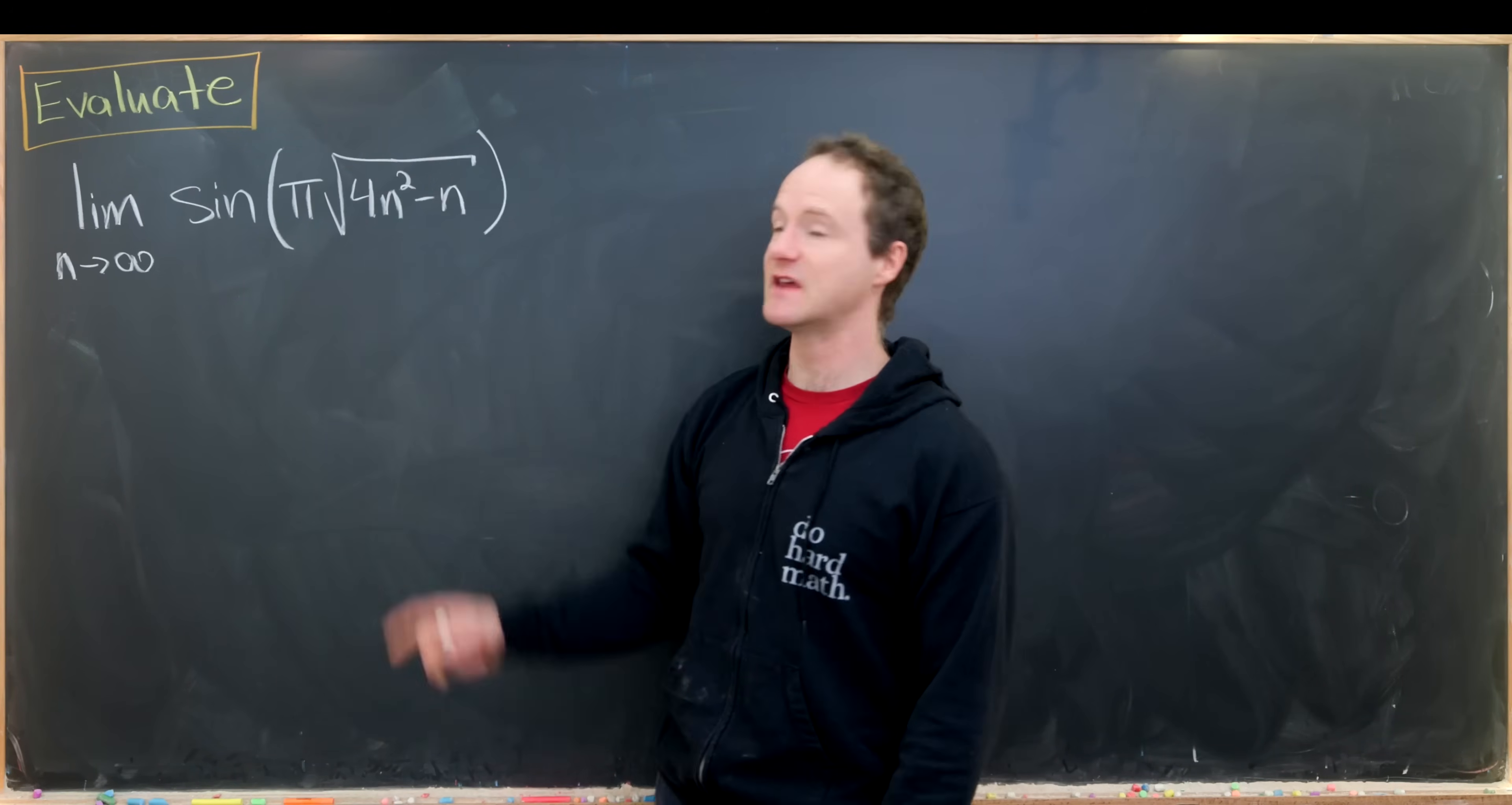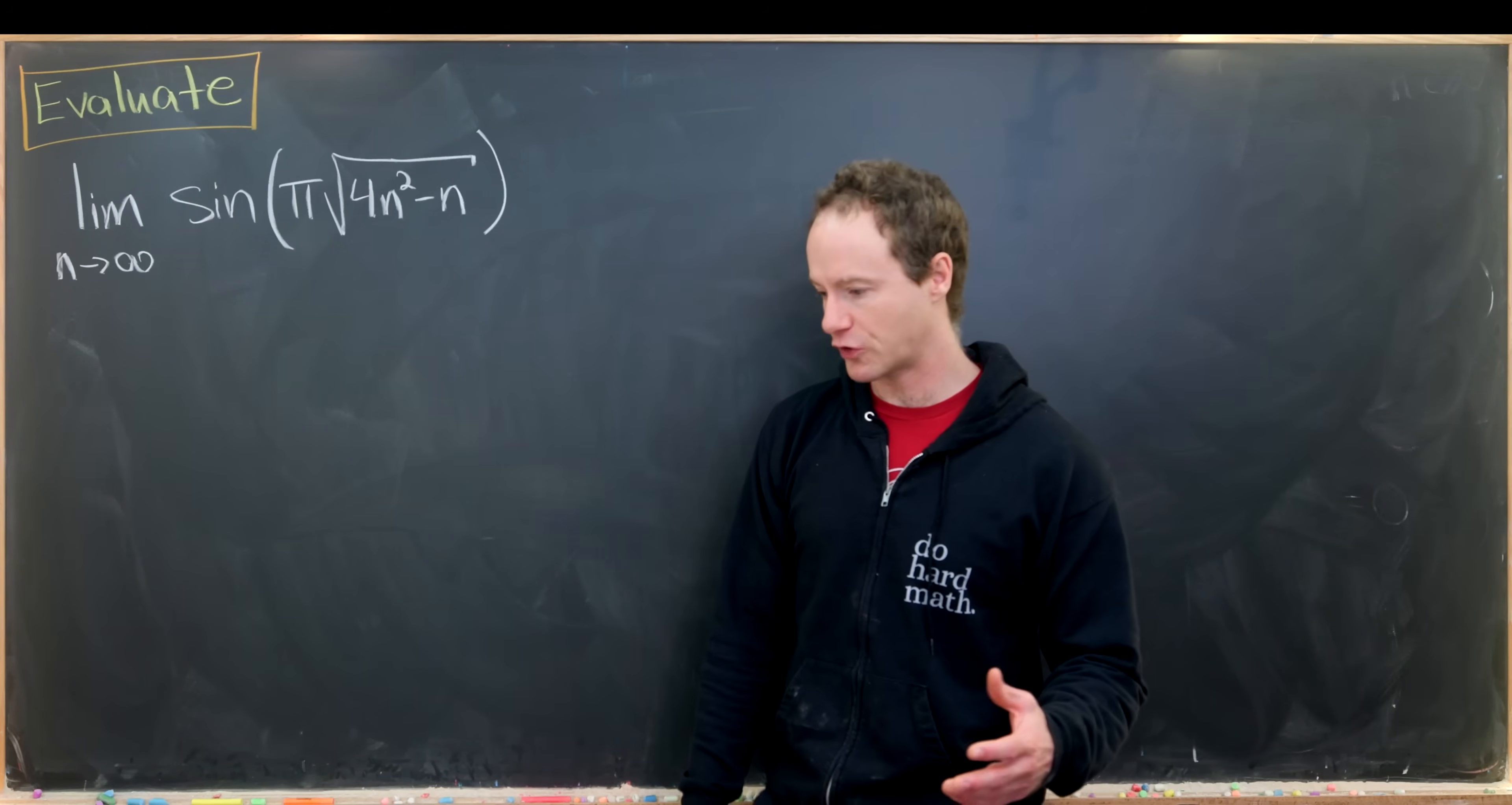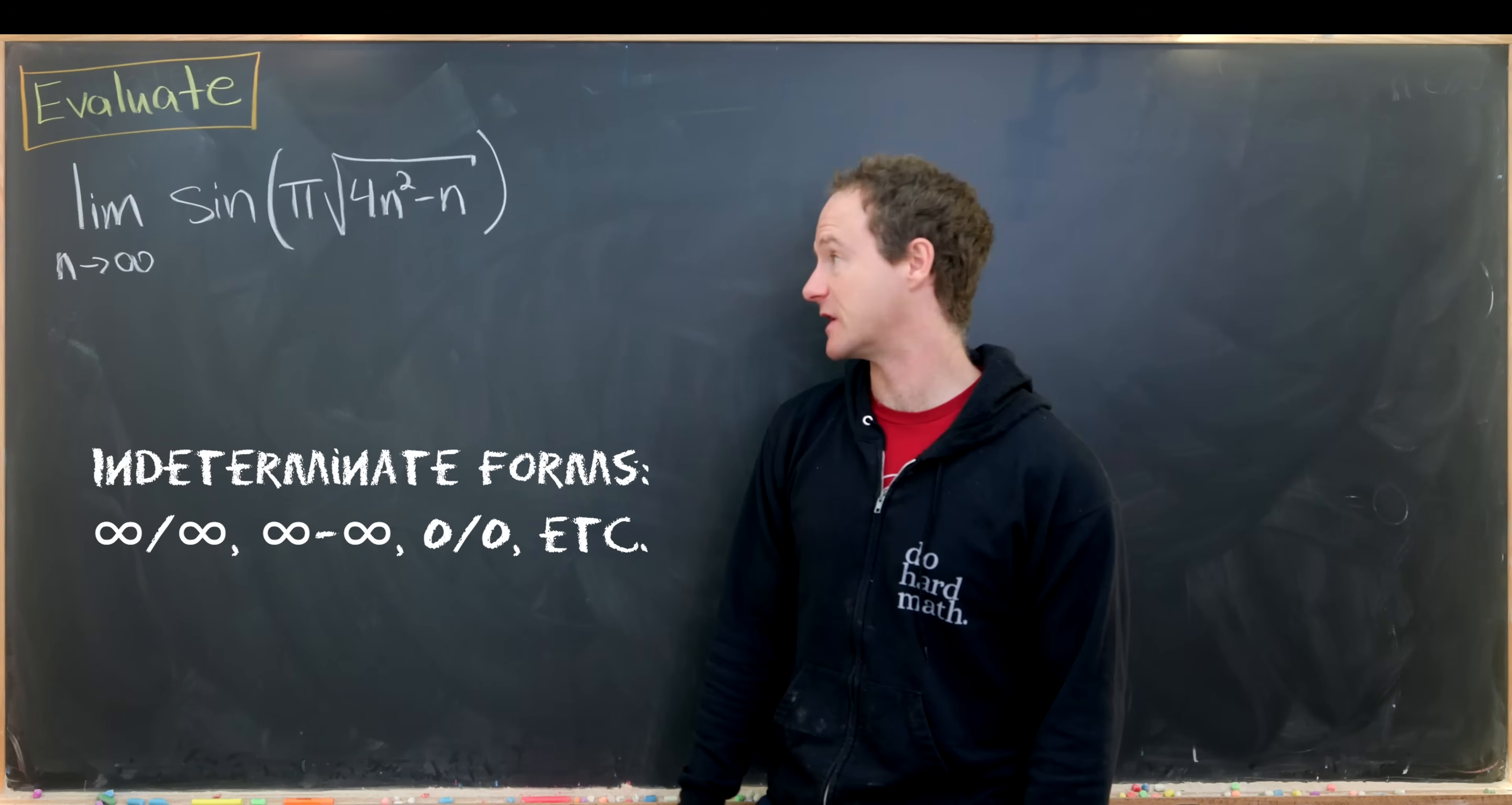Instead of thinking of it just like this you want to apply the fact that sine is 2 pi periodic in order to write this in terms of something where the argument is not infinity but the argument is an indeterminate form.